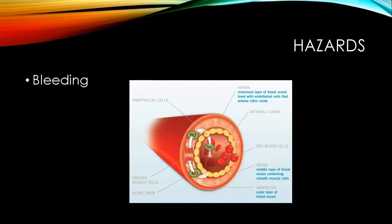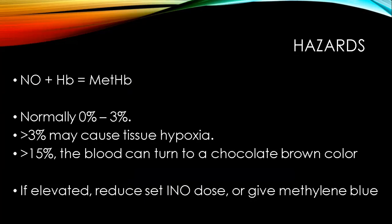Remember from earlier, one of the desirable things about the body's natural nitric oxide production is that it reduces platelet aggregation — good for circulatory health — but as a hazard of inhaled nitric oxide, that's not always desirable and we can get some bleeding. Additionally, if nitric oxide mixes with hemoglobin, we get methemoglobin. Nitric oxide has a huge affinity for hemoglobin — about 1,500 times more than carbon monoxide — so it occupies hemoglobin that would normally be bound to oxygen, contributing to tissue hypoxia in a similar way to carbon monoxide.